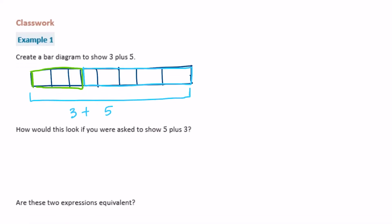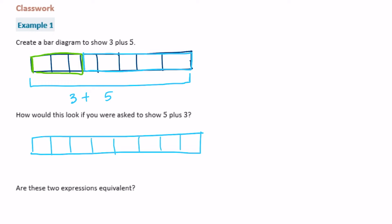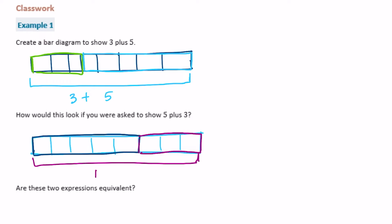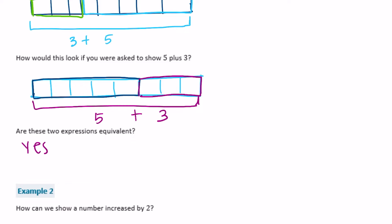How would this look if you were asked to show 5 plus 3? We're going to do the same thing but reverse the order — so instead of 3 first, I'll do 5 and then 3. So there we have 5 plus 3. Are these two expressions equivalent? 3 plus 5 is 8, and 5 plus 3 is 8, so yes.